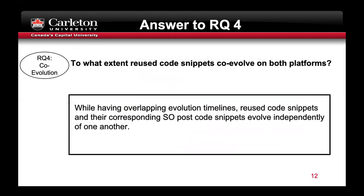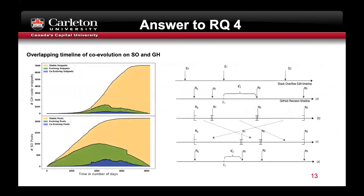Coming to the final RQ: to what extent do the reused code snippets co-evolve on both platforms? While there is an overlap of revision timelines for snippets of both types, the reused code snippets and their corresponding SO post snippets evolve independent of one another. This graph shows overlapping revision timelines, with the blue portion showing a pair of snippets on Stack Overflow and GitHub evolving simultaneously. The right-hand side figure shows the control and simulated revision timelines to find if co-evolution is by chance or not. The results indicate that it is by chance, hence the snippets are evolving independently.